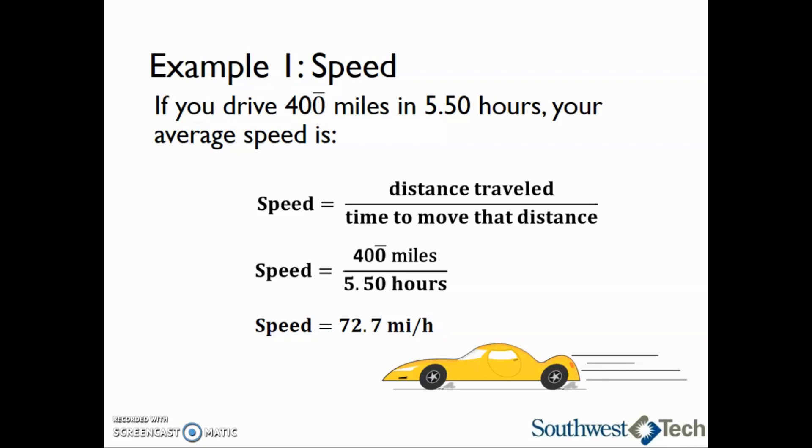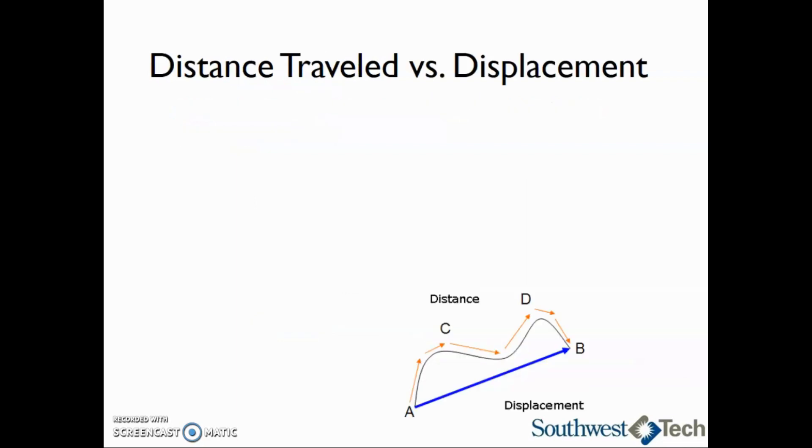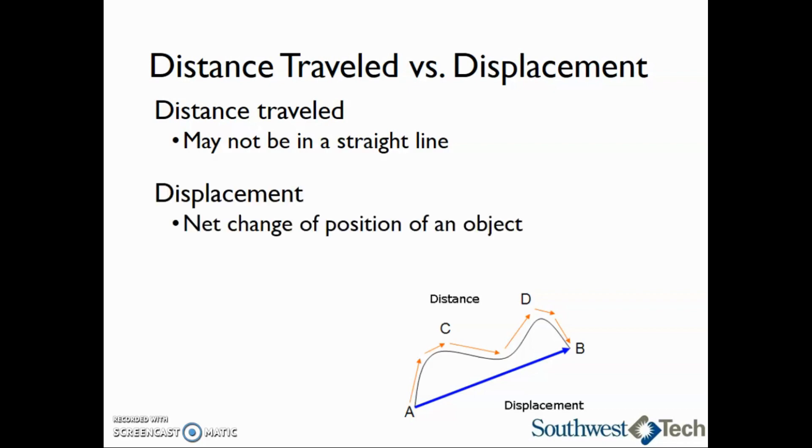What is missing when we talk about speed? Well, that will be direction. In order to talk about the missing direction, we need to look at the distance traveled versus displacement. The distance that you travel to get somewhere may or may not be in a straight line. However, displacement is the net change in position. So this is the straight line from your initial position to your final position. Displacement is also a vector which has a magnitude and a direction.